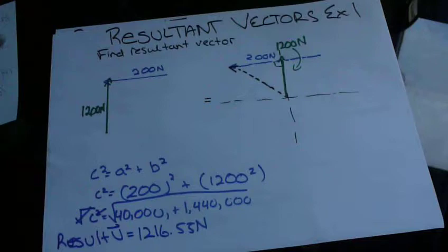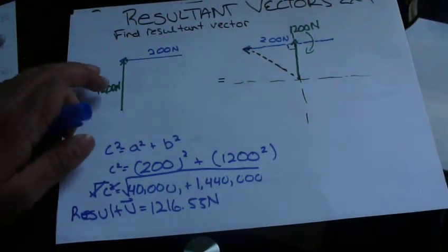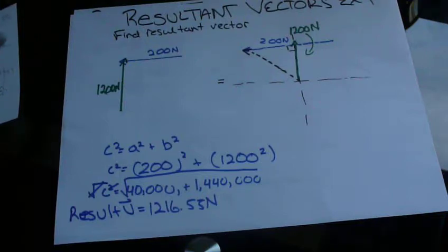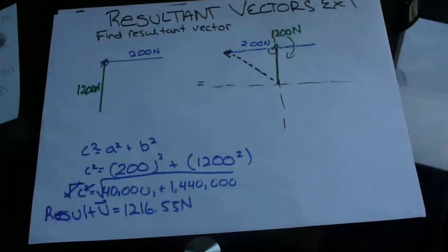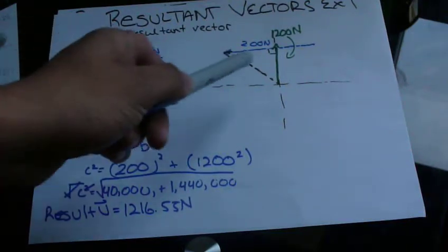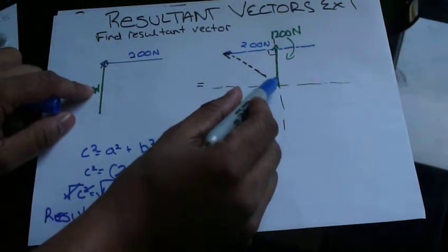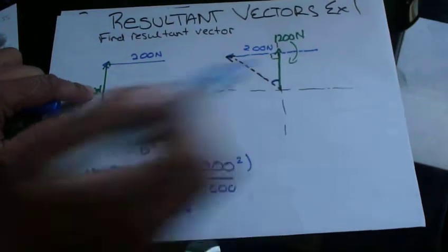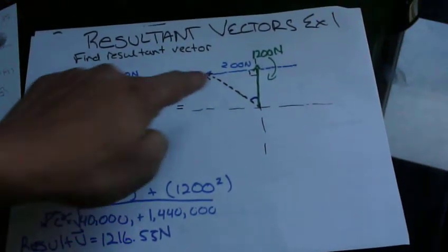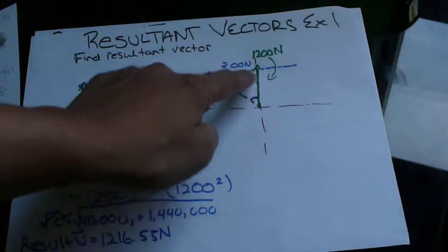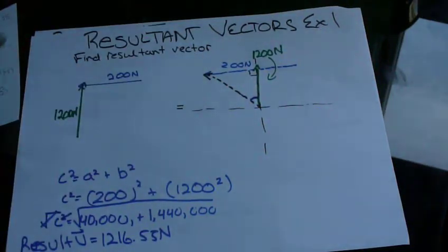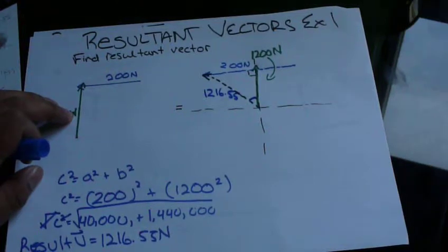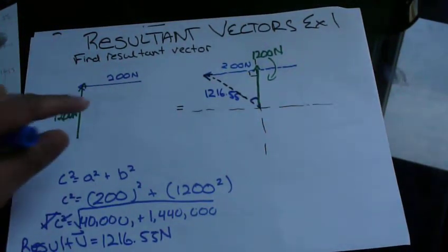So we have the magnitude. Now, since we have the magnitude, we can figure out the angle. We know it's pointing, it's stemming from here, right? This is where the vector is beginning. So we're going to take this angle. So what can we use? We can use tan, since we have both the opposite and adjacent side values. And now we have obtained the hypotenuse value as 1216.55. So we can use tan, or we can use sin, or we can use cos. I would like to use the sin function.